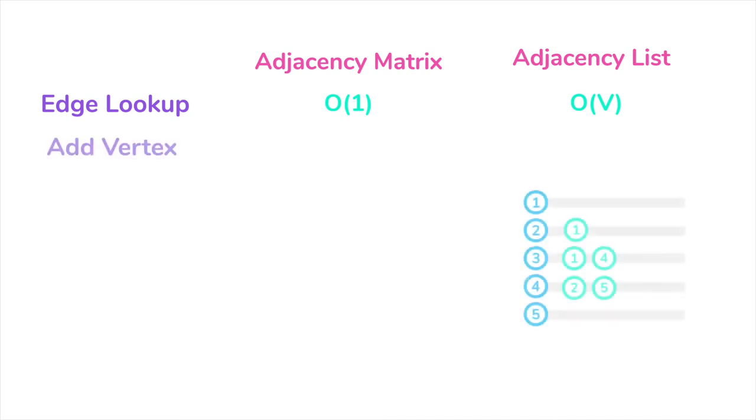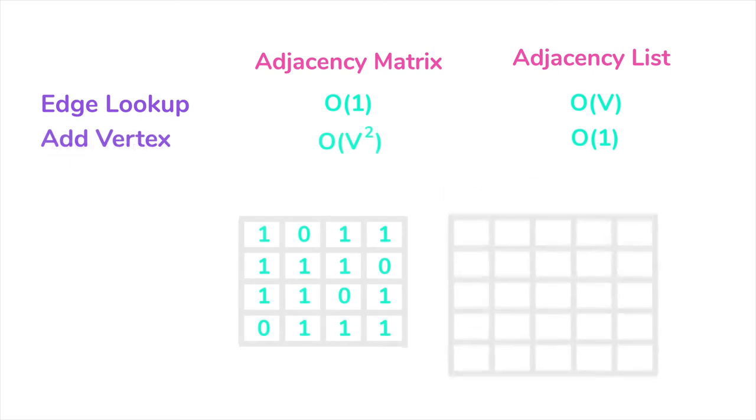Let's think of some other operations. Adding a vertex could be easily done in an adjacency list because we just need to add an element to the list. But for the adjacency matrix, we need to copy the whole array to add new dimensions to the matrix, which would be O of V squared.